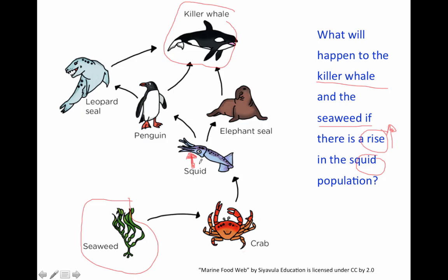So if the squid increases, that's going to cause its prey, the crab, to decrease because there are going to be more predators of it. So then that would also cause the seaweed to increase because there are less crabs to eat it. So the seaweed would end up increasing. Now let's go back — squid would increase, so then the elephant seals would also increase. And if the squid are increasing, the penguins are going to increase, which would then lead to the killer whales increasing as well. Go ahead and erase your whiteboard at this time.